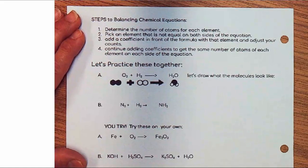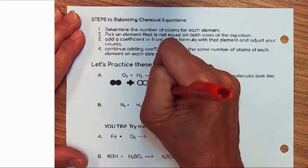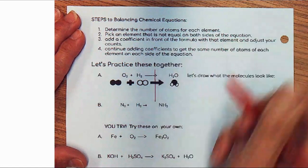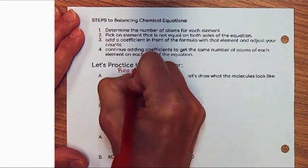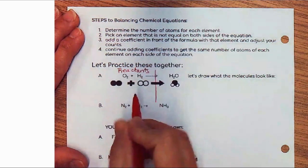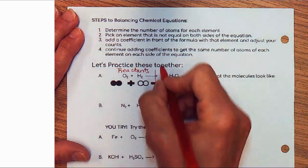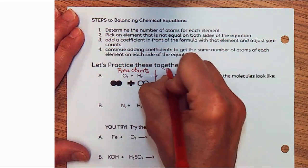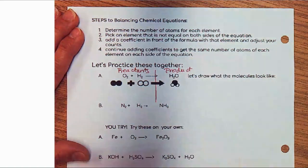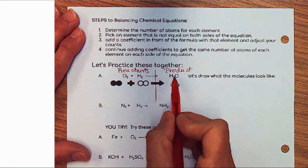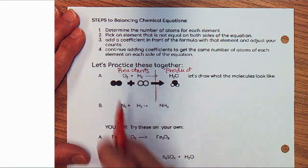Let's go ahead and balance some equations. The first step is to draw a line through your arrow to separate your reactants on the left side of the equation — that's what goes into the chemical reaction — from your products. In this case, our product is water, which is formed as a result of the chemical reaction between hydrogen and oxygen.